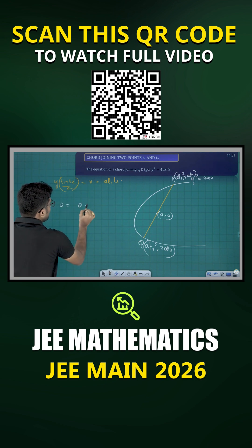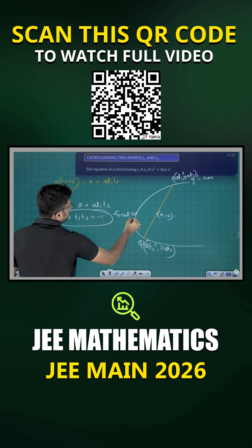So finally you get t1 times t2 equals minus 1 if it is a focal chord. So from here we get the ends of the focal chord.